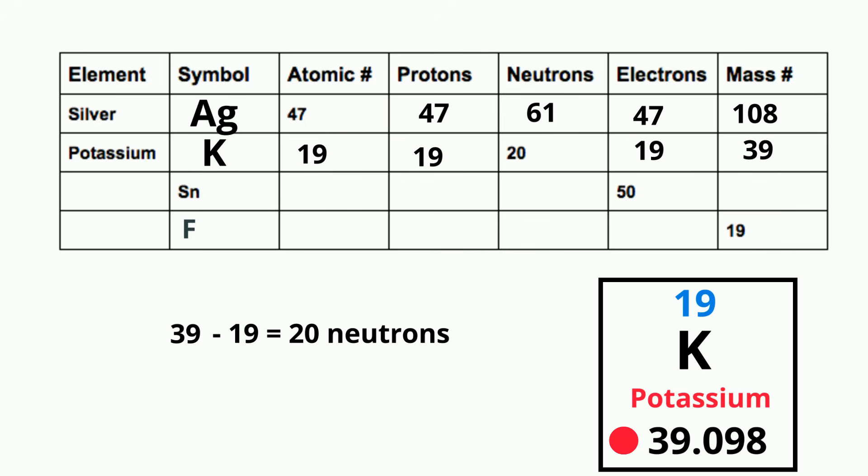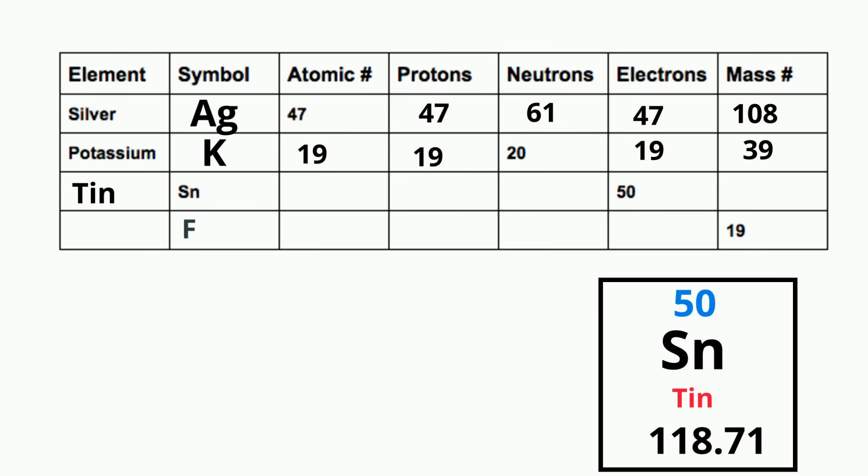Next let's look at tin. Tin has a symbol of Sn, an atomic number of 50. So it has 50 protons. Next let's skip over to electrons. It's a zero charge. So 50 minus 0 is 50. The mass number 118.71 will be rounded to 119. And then 119 minus 50 is 69. And that's the number of neutrons.